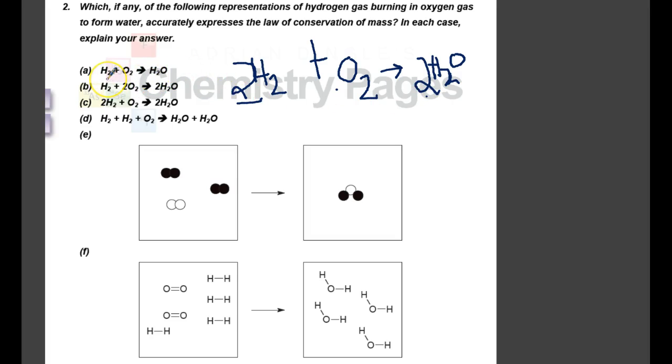We look at this first one. Is it balanced? Does it represent conservation of mass? It is a 1, 1, 1, so that is not an accurate expression. This next one has a 1, 2, 2, and that doesn't reflect what happens here, so that's not accurate. This next one, though, goes 2, 1, 2, just like that. So I would say it's a good representation of hydrogen burning in oxygen to make water.